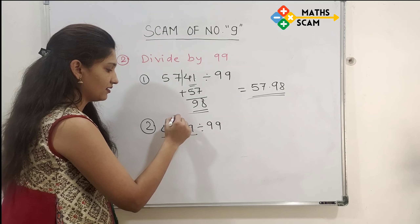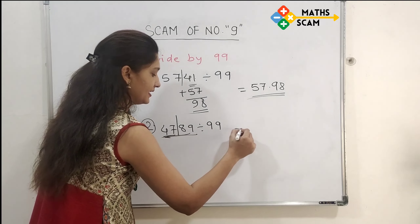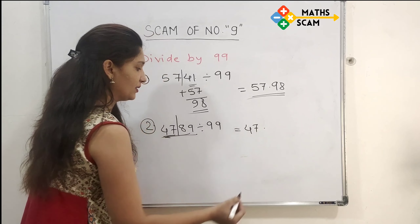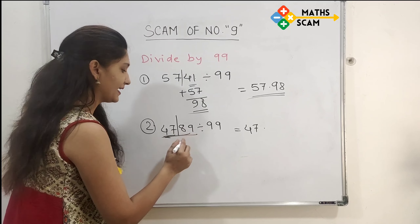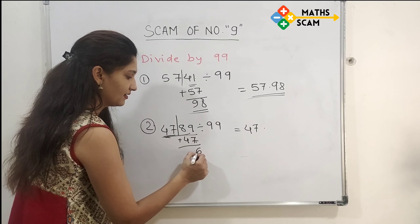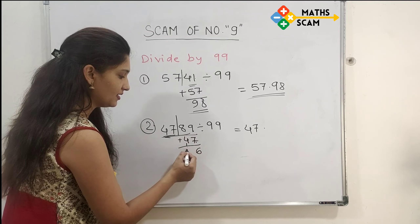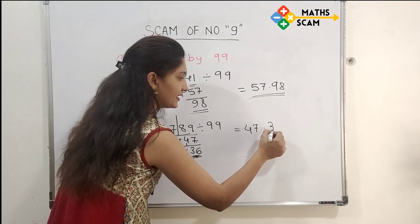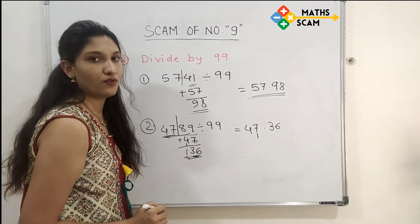Next example: divide by 99. For a 4-digit number, divide it into 2 parts and write the first part, 47, as it is. Add a decimal point. Then add the first part into the second part: 89 plus 47. 9 plus 7 is 16 — write 6, carry 1. 8 plus 4 is 12, plus 1 carry is 13.